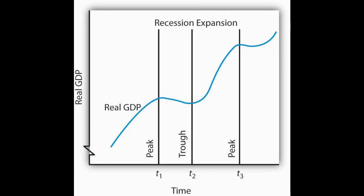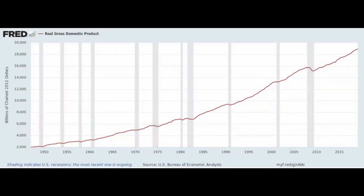Expansions usually end at the peak of a business cycle, and recessions then follow, ending with the trough of the business cycle, which then leads into another period of expansions, and so on. In the United States, the general trend of real GDP has been one of exponential growth, despite the nine recessions we've experienced since the 1960s, for now.